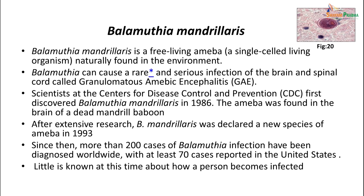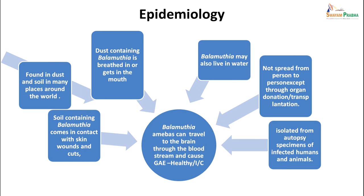Balamuthia mandrillaris is a free-living, single-celled amoeba naturally found in the environment. It can cause a rare and serious infection of the brain and spinal cord called granulomatous amoebic encephalitis. Scientists at CDC first discovered this organism in 1986 in the brain of a dead mandrill baboon. After extensive research, they declared it a new species - Balamuthia mandrillaris - in 1993. Since then, around 200 cases of infection have been diagnosed worldwide, with at least 70 reported in the United States. The infection may occur through contact with dust and soil, breathing in contaminated dust, or through water. Spread from person to person is not seen except through organ donation or transplantation.